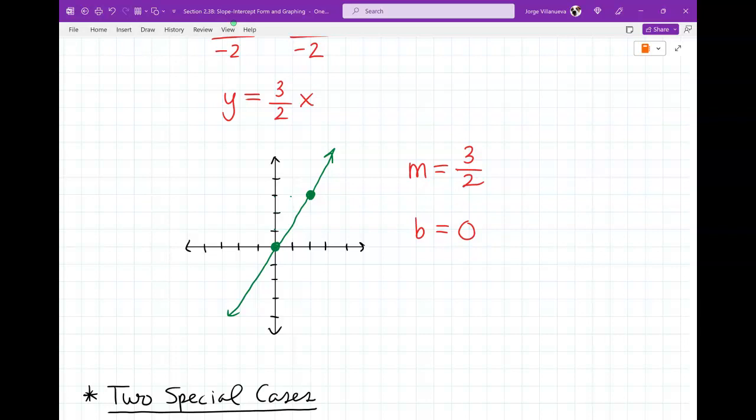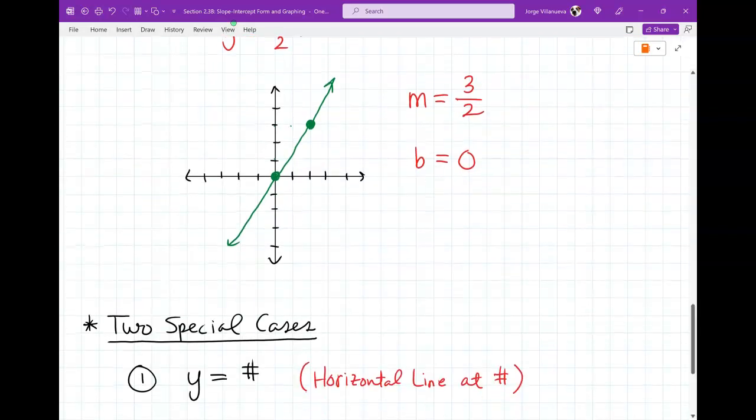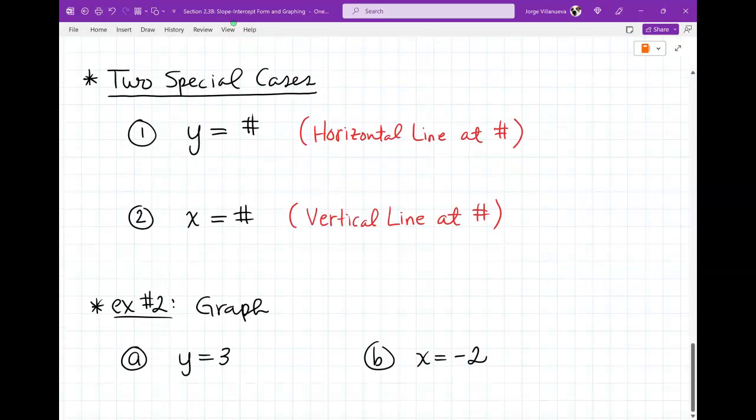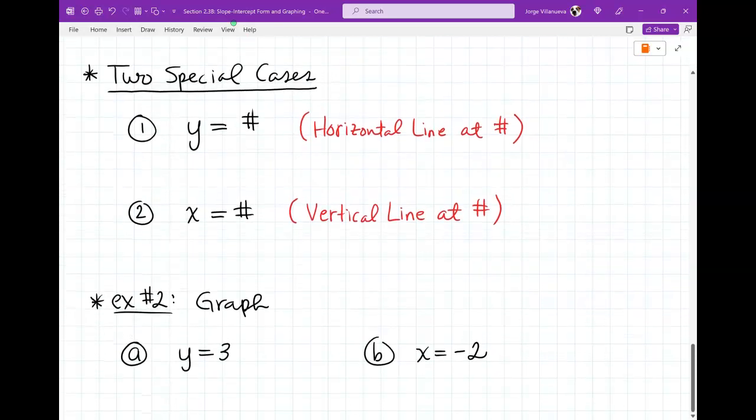Now, we are done with everything you need to know with the exception of this. Two special cases. Sometimes you see equations and they don't have two variables. They don't just say like y equals 5 or x equals negative 2 or something like that.